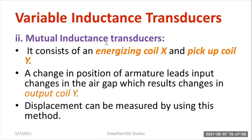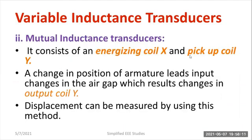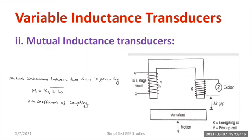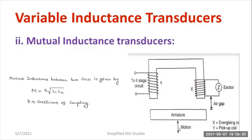Now for the second passive type: mutual inductance type transducer. It comprises two coils — the first one is called the energizing coil (primary coil, X), and the second is the pickup coil (secondary coil, Y). Using an armature conductor, the mechanical body is connected to the armature. As the armature moves toward the arrangement, the air gap varies and is reduced. As the air gap reduces, the reluctance also reduces, because reluctance is directly proportional to length.